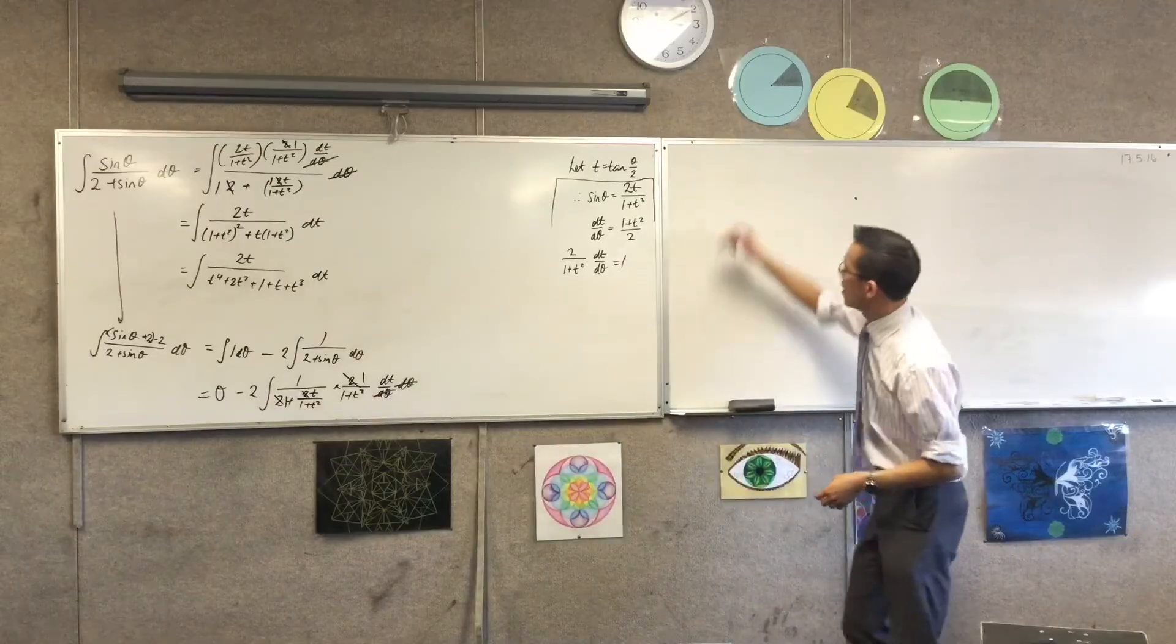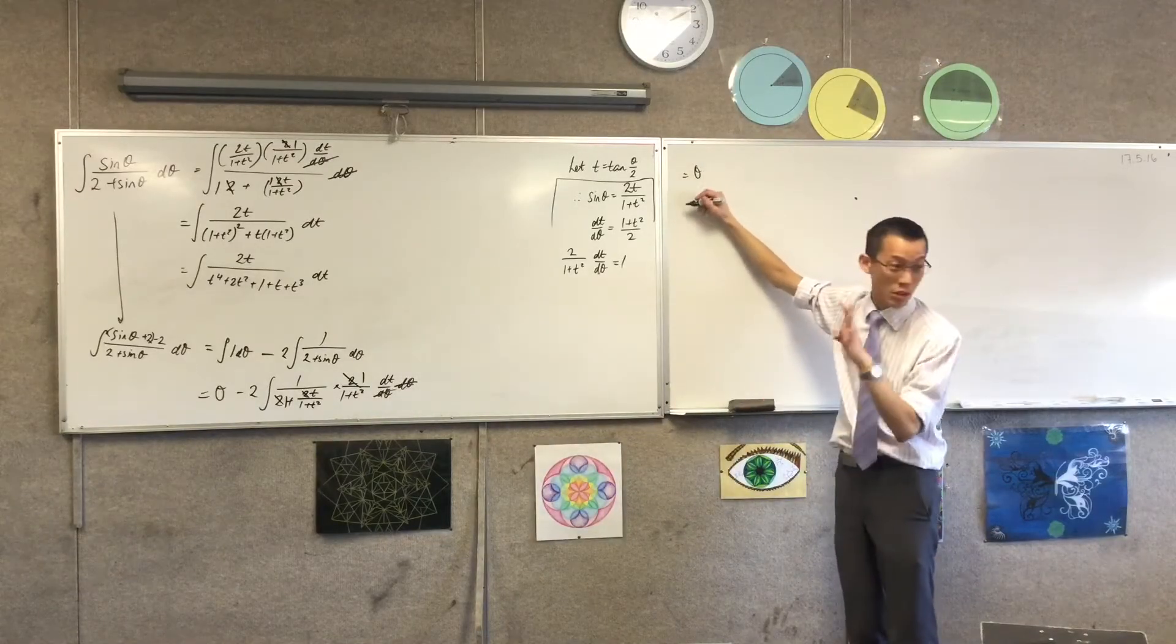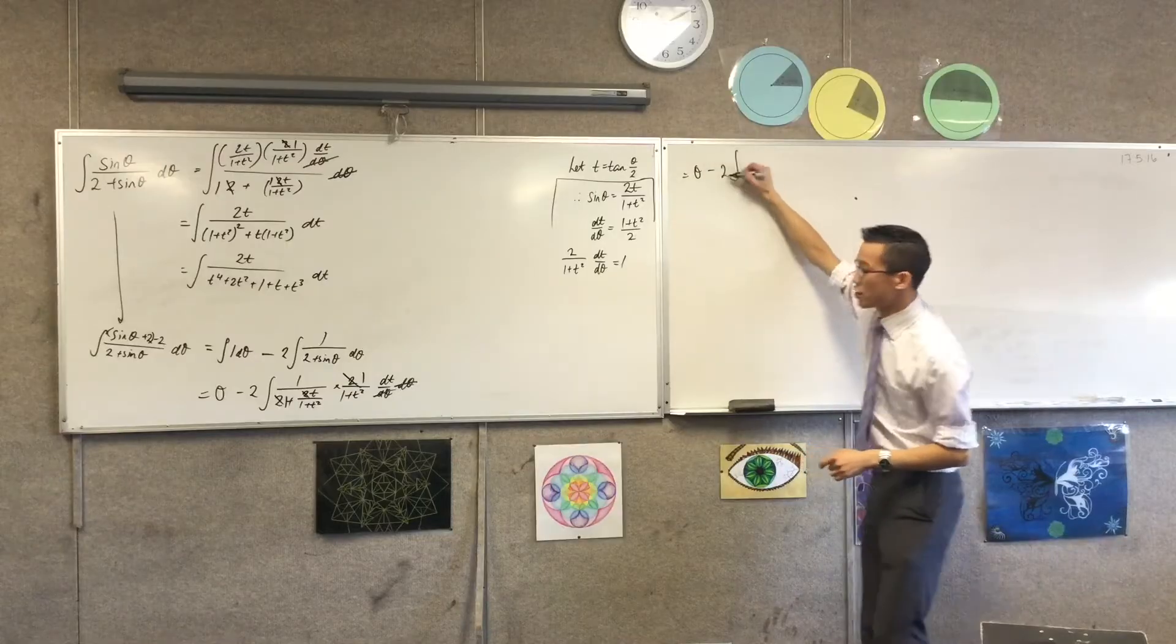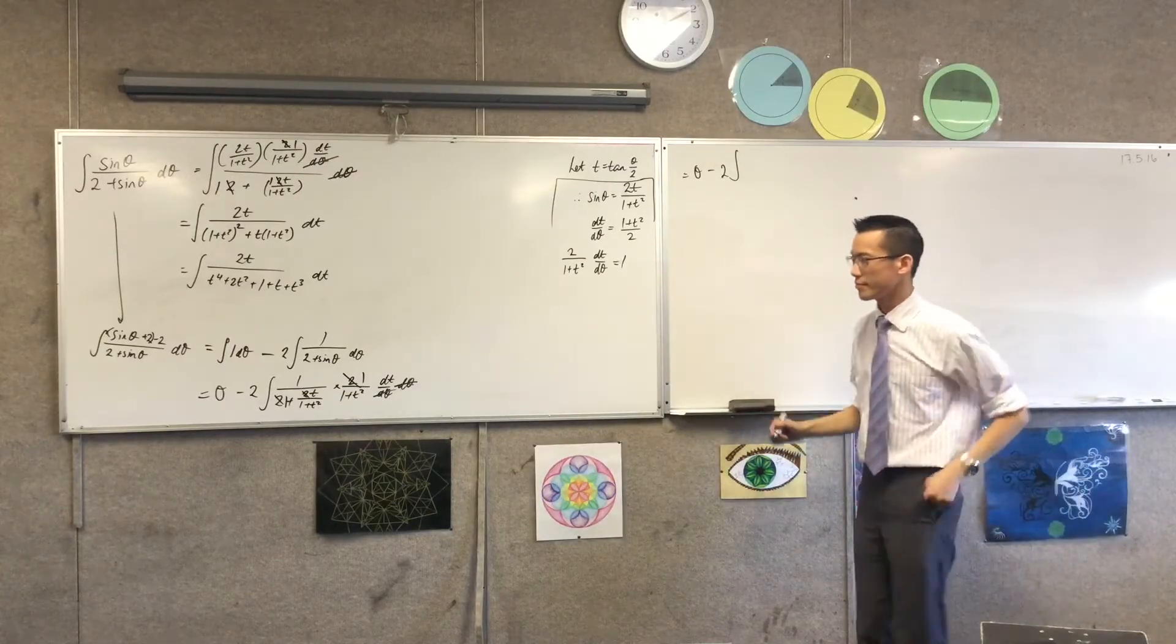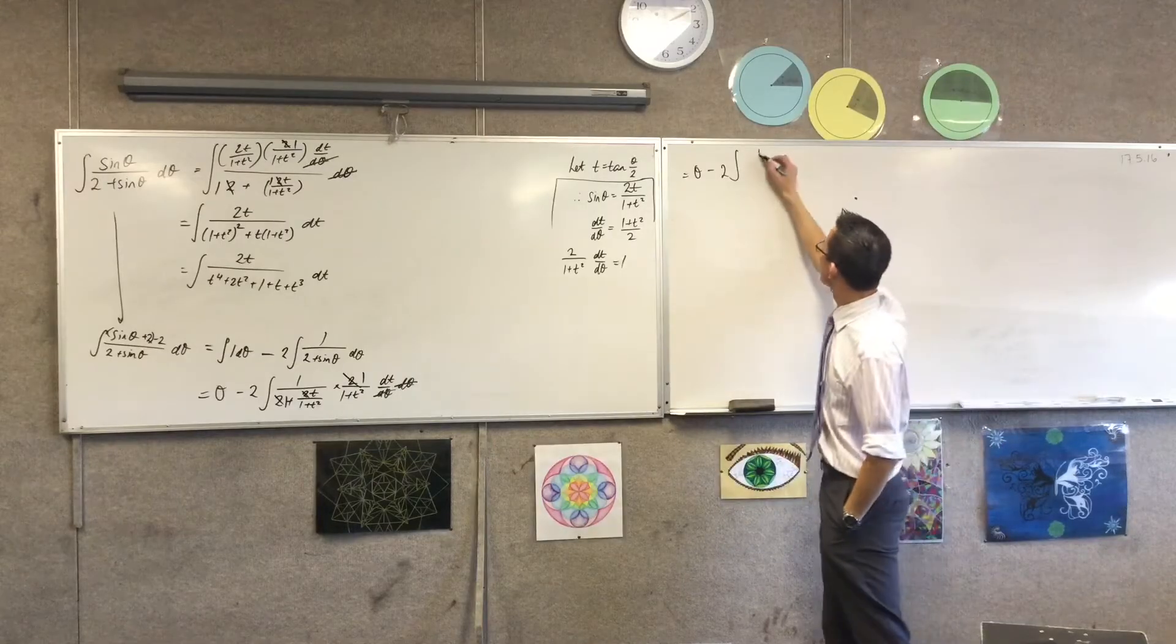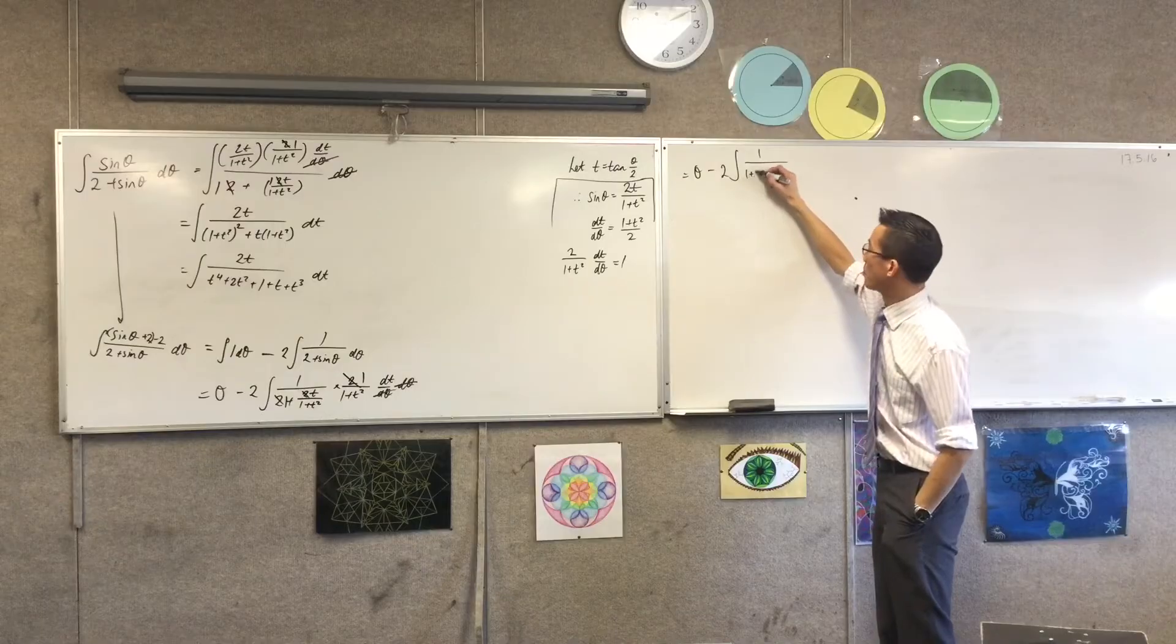Okay. So what am I going to end up with? I've got theta hanging out the front. Don't forget that guy. We don't usually have him, but don't let him disappear. 2 over 2 integral of what? What have I got?